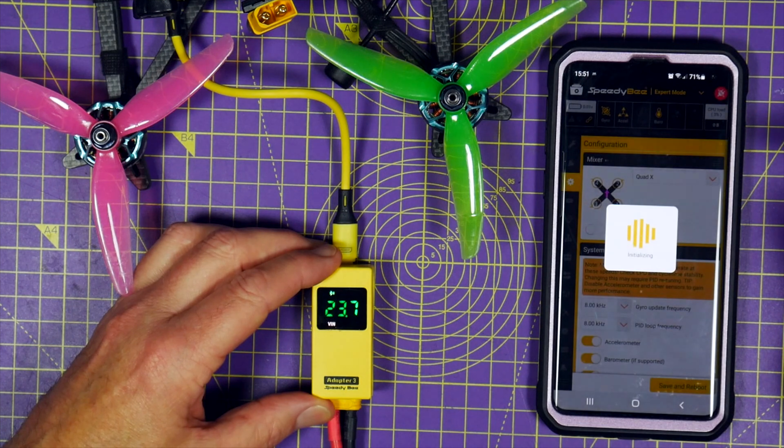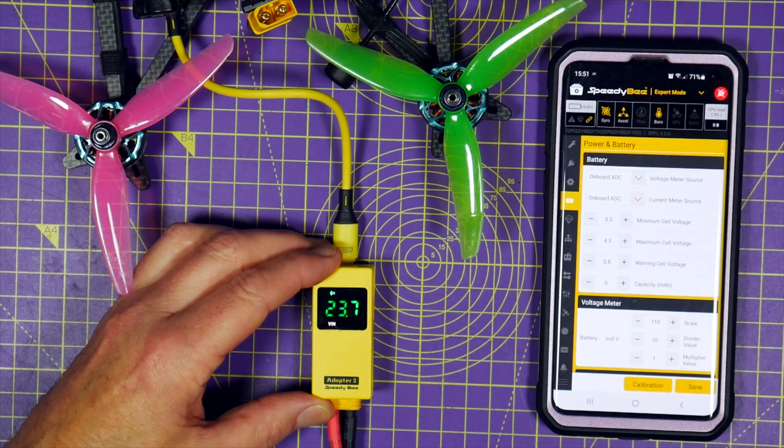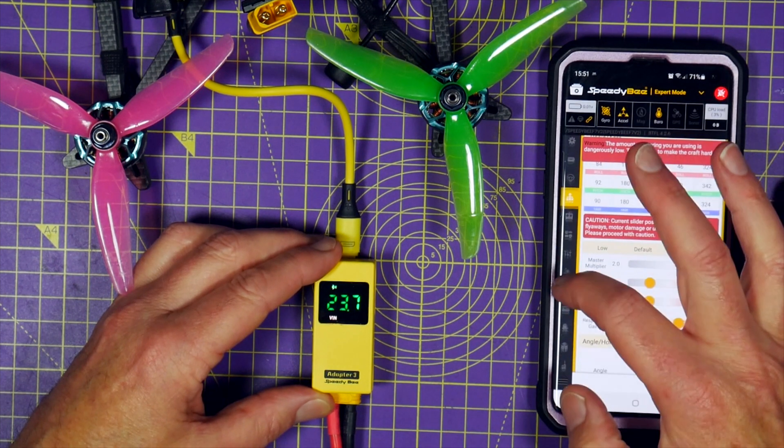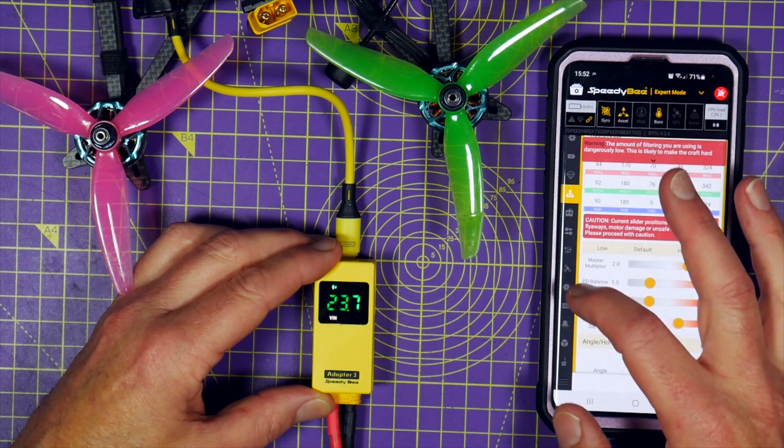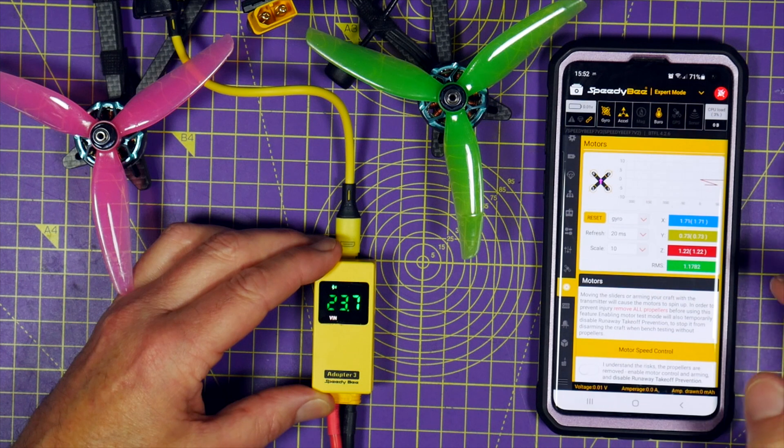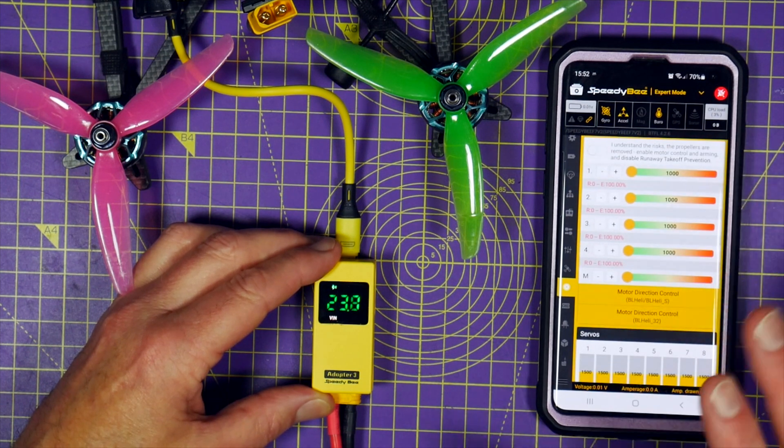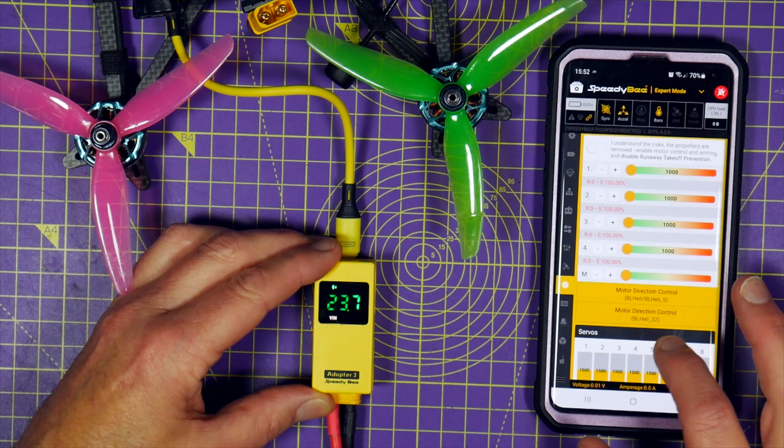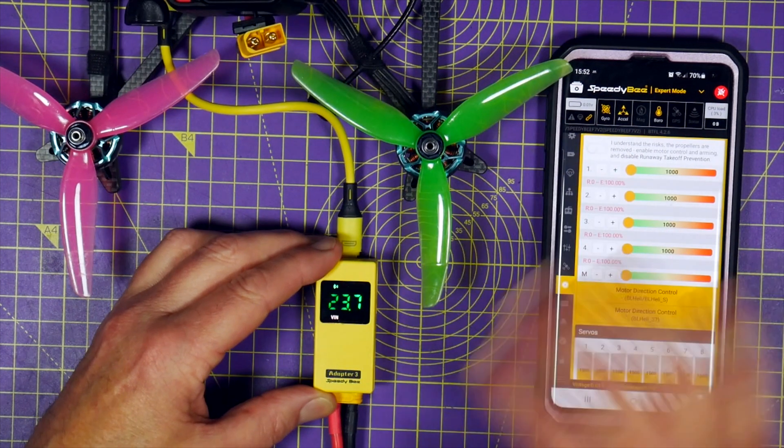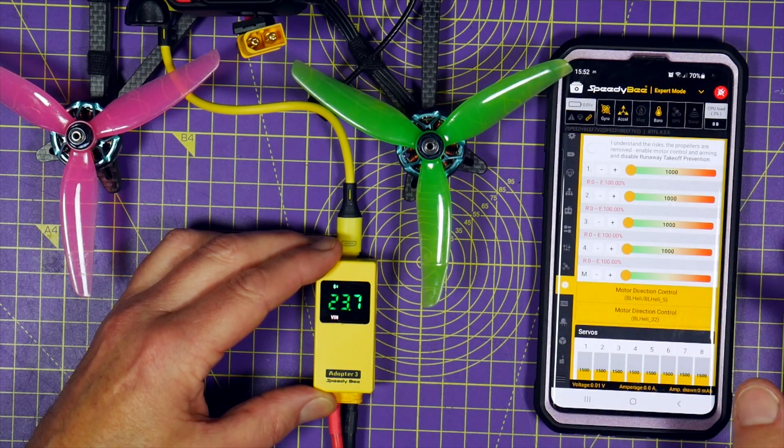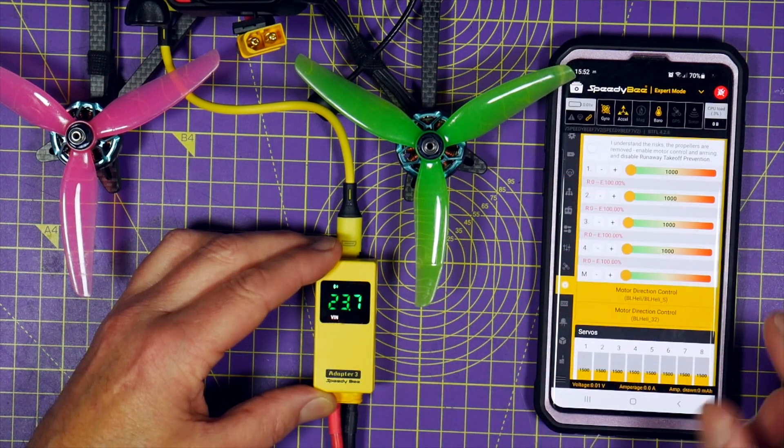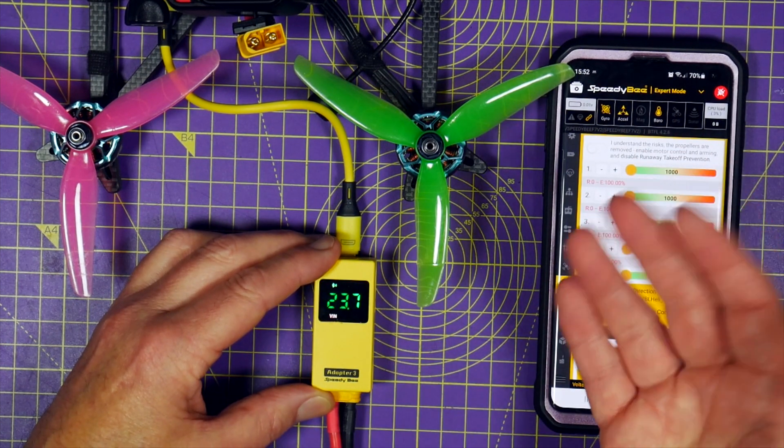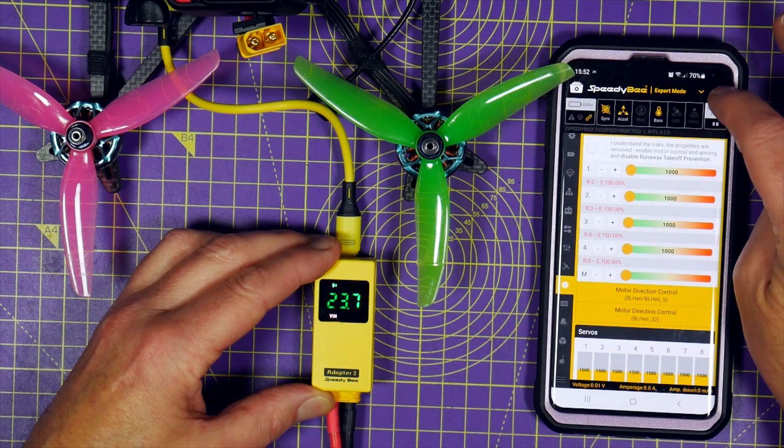All your port settings, general configuration, power and battery, importantly, you've got all your PID settings on here. And if we go down to this section on motors, the nice thing about this, and I have done a video about this before, but they've updated the app to include BLHeli32 support. So if you want to change the direction on your motors, you don't need to go into BLHeli. You just follow the links here. And swapping the motor direction is really simple. All very straightforward.